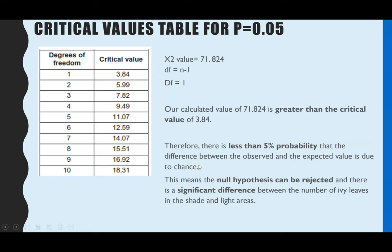If we think back to our null hypothesis, we were saying there will be no difference between the observed number of plants in the two areas and the expected number. But we can now reject that null hypothesis because we've proven there was a significant difference between what we observed and what we expected. This shows us there is a significant difference between the number of ivy leaves in the shade and light areas.